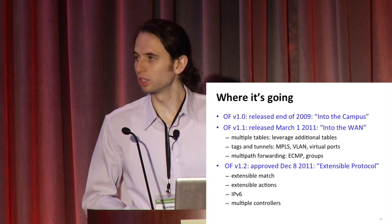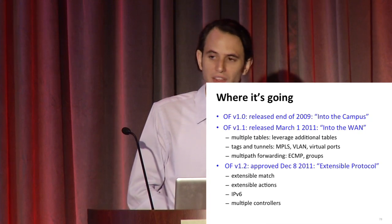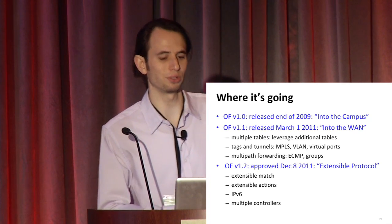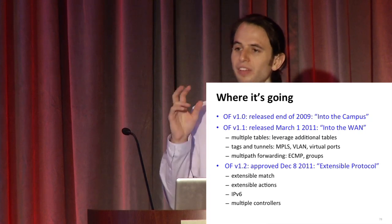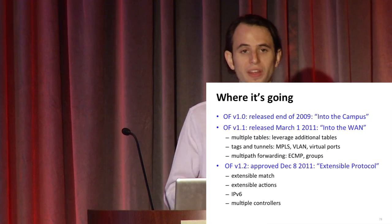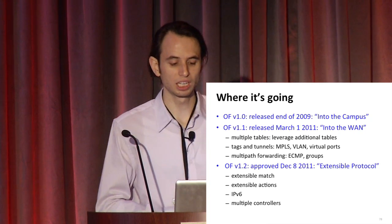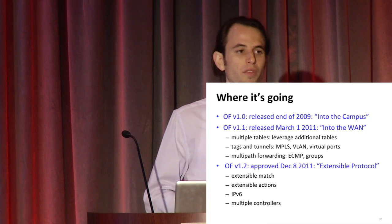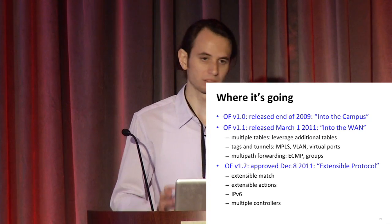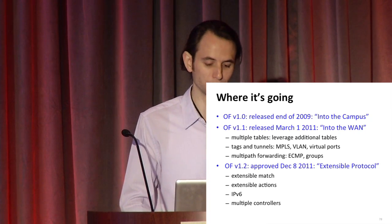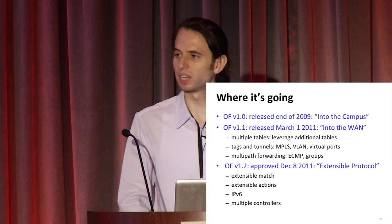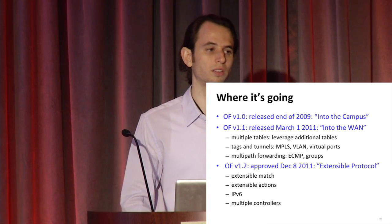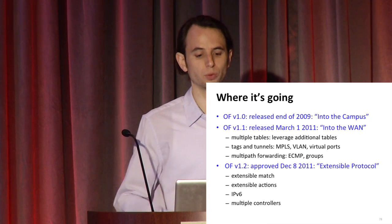OpenFlow 1.2 was recently approved - I think it's in a step where they're waiting to make sure there are no patent issues. This is the extensible protocol version: extensible match, extensible actions, adding support for IPv6 which carriers say is an absolute requirement, as well as a primitive to support multiple controllers and allow the controller to change the role of a switch.